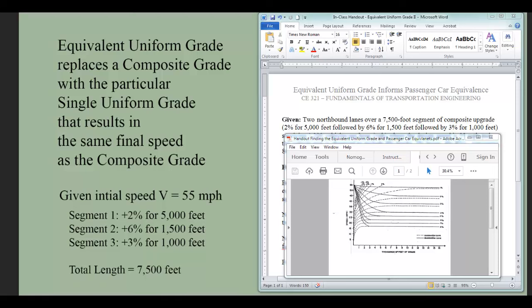We're not really ready for that yet, but in looking ahead we're going to be wondering how many passenger cars worth of capacity does each heavy vehicle take up. Does a truck or bus take up two, three, or maybe four passenger cars worth of capacity? It's this equivalent uniform grade that can potentially inform that in a way that is a substitute for the more complex situation of the composite grade. Let's begin.